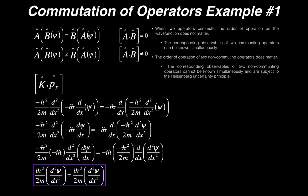I'm going to show you how to calculate this and determine whether or not two operators commute. We're going to look at the kinetic energy operator and the momentum in the x-direction operator. For kinetic energy, it's negative ℏ² over 2m times the second derivative with respect to x. The momentum operator in the x-direction is negative iℏ times the first derivative with respect to x.